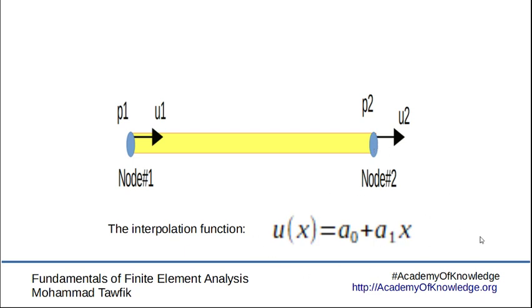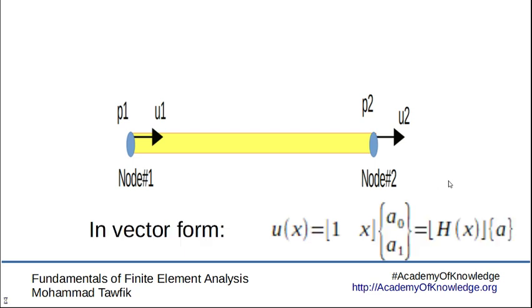Using this linear function, this is a very general linear polynomial, we can rewrite it in vector form like this, where we call the row vector we have here H of x.